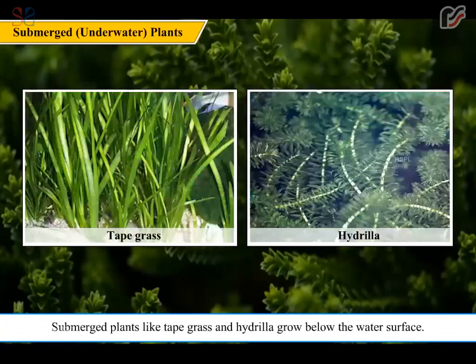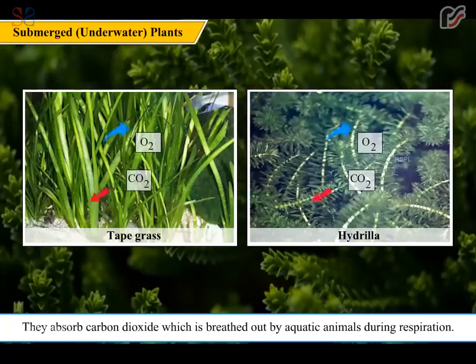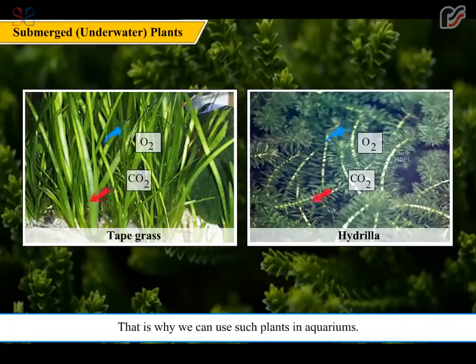Submerged plants like eel grass and hydrilla grow below the water surface. Their narrow leaves have no stomata at all — they breathe through their body surface. They absorb carbon dioxide which is breathed out by aquatic animals during respiration. That is why we can use such plants in aquariums.